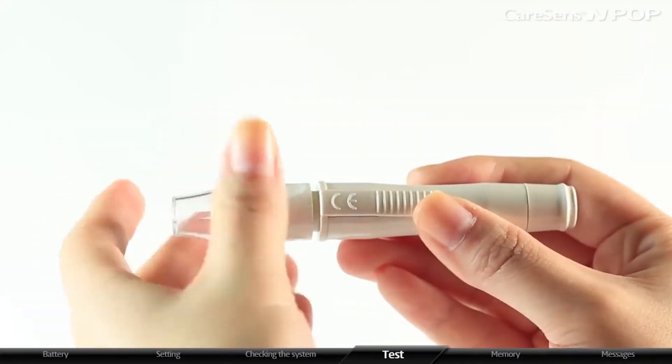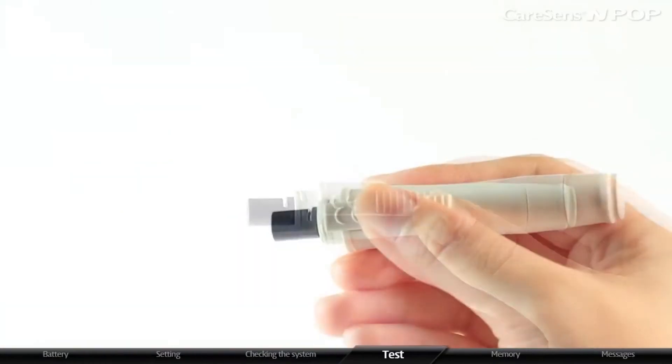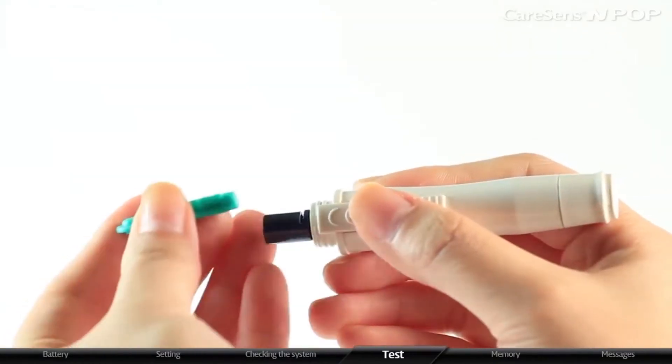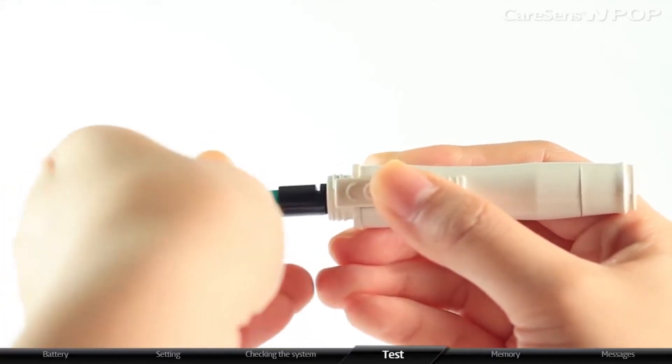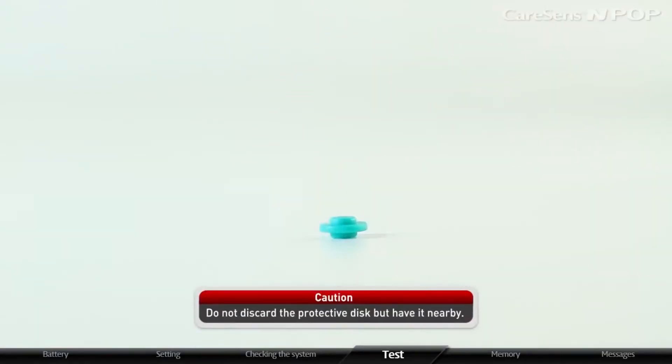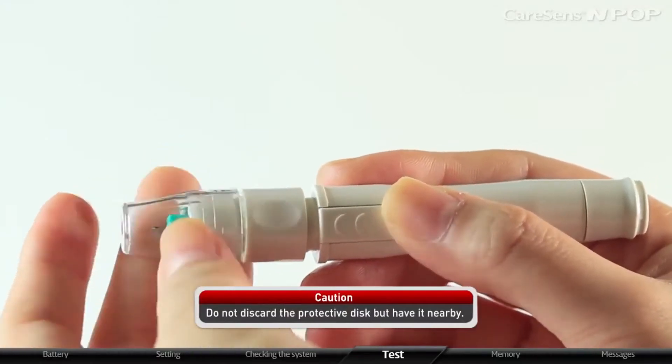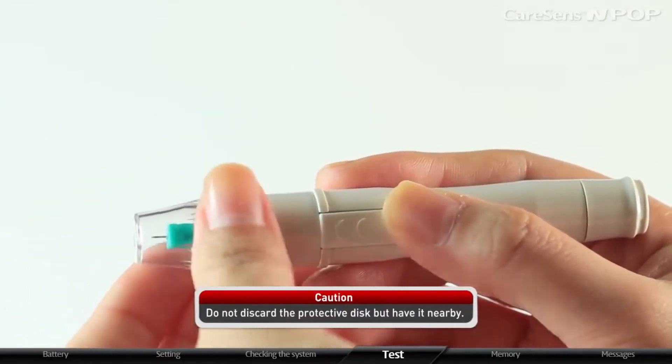Unscrew the tip of the lancing device. After completely inserting a disposable lancet into the lancet holder, gently twist out the protective disc and close the tip. Do not discard the protective disc but have it nearby.